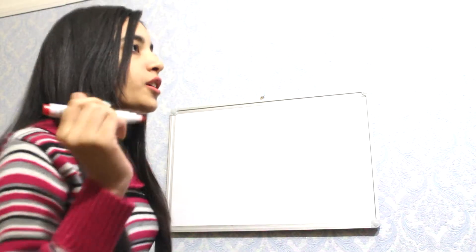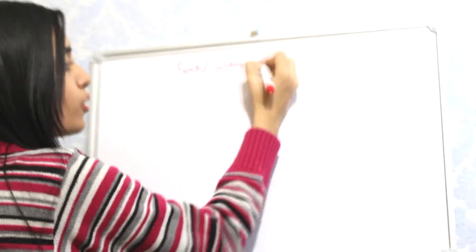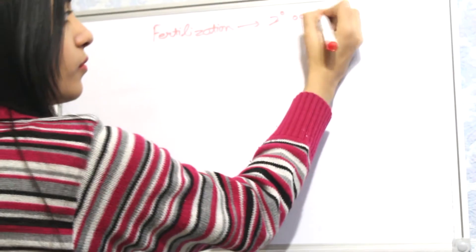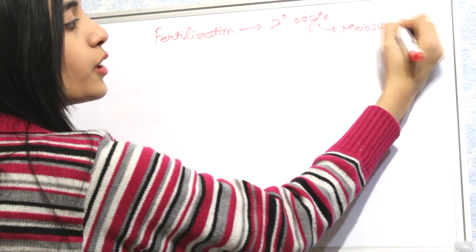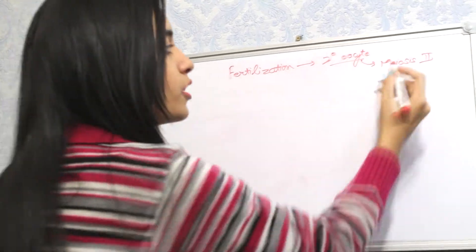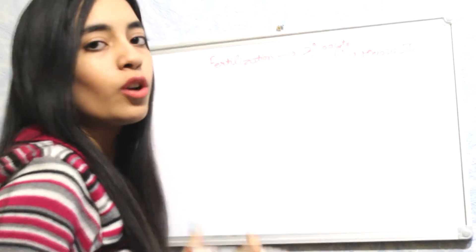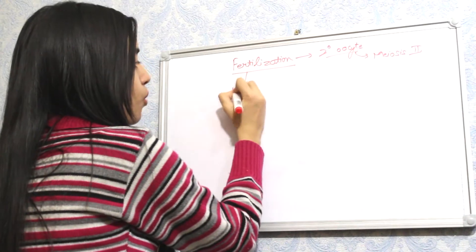What is fertilization? Fertilization is the fusion of a male gamete and a female gamete to form a zygote. Before that, I want to remind you that after fertilization, the secondary oocyte undergoes meiosis II. Only if the secondary oocyte is fertilized will it undergo meiosis II; otherwise it will simply ovulate during the menstrual cycle.